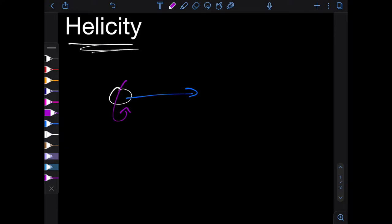So how can we describe this mathematically? Well, looking at its straight line motion, we can describe that using its momentum vector, which is just its mass times velocity.